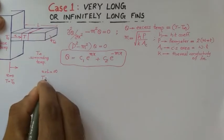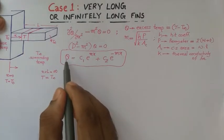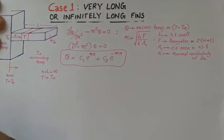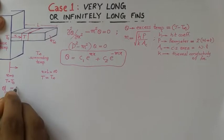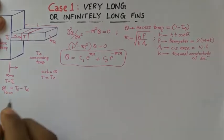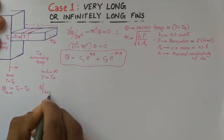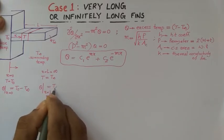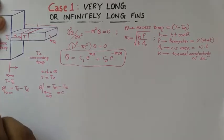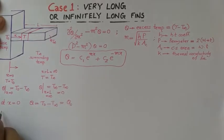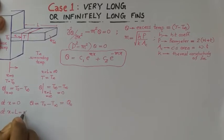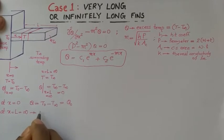At the end of the fin where x equals infinity, the temperature drops to t-infinity. We convert these conditions into theta form: at x equal to 0, theta equals t0 minus t-infinity, denoted as theta-0. At x equal to L or infinity, theta equals t-infinity minus t-infinity, which equals 0. So the two boundary conditions are: theta at x=0 equals theta-0, and theta at x=infinity equals 0.